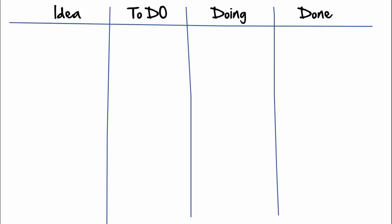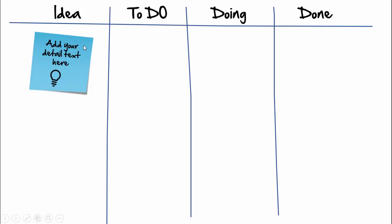In today's tutorial I'm going to show you how to create a planning board in PowerPoint. This is how the slide looks — I have created four sections where the first column is the idea, the next column is the to-do list, doing, and done. When I click, the first idea will come in the form of a post-it note. You can see here you can add the text and if you want you can add some icons here.